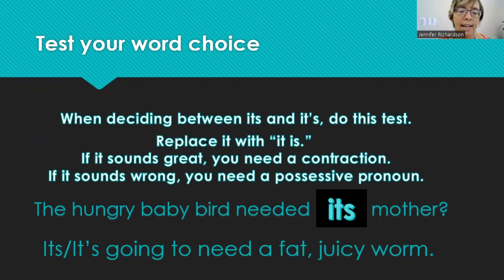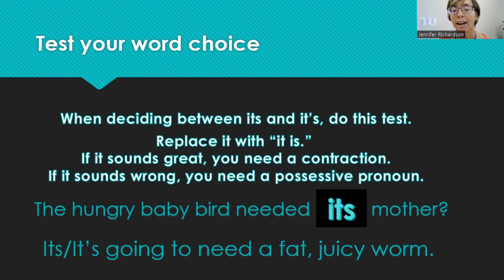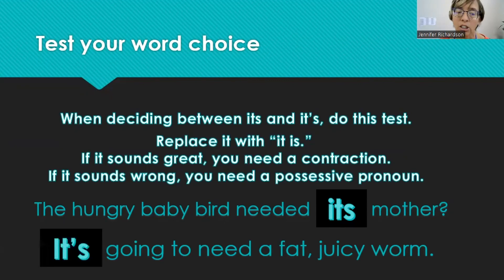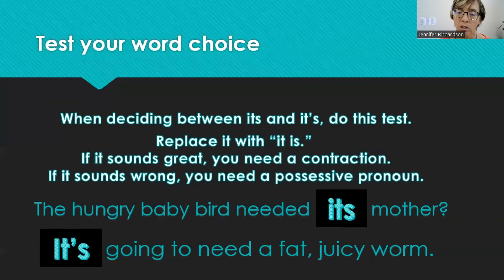One more example: it's going to need a fat, juicy worm. It is going to need a fat, juicy worm — now that sounds right. For this one, I need a contraction. It's is the way to go with the apostrophe S.